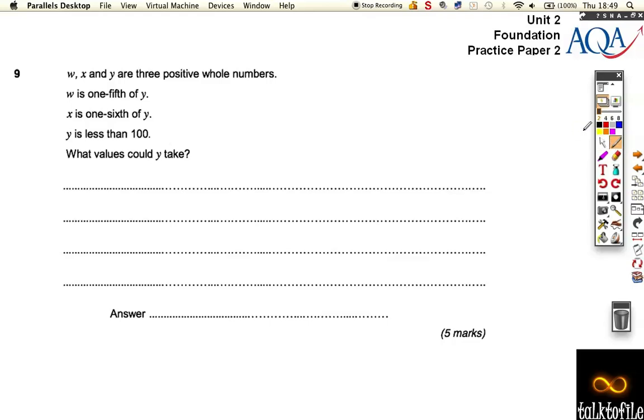Okay, question number nine says that w, x, and y are three positive whole numbers. So we know that integers are whole numbers and they've got to be above zero. It says w is one-fifth of y, so w times five will get to y, and x is one-sixth of y, so x times six is equal to y.